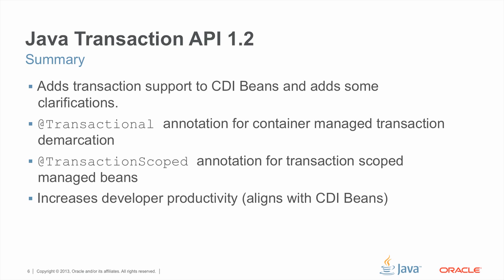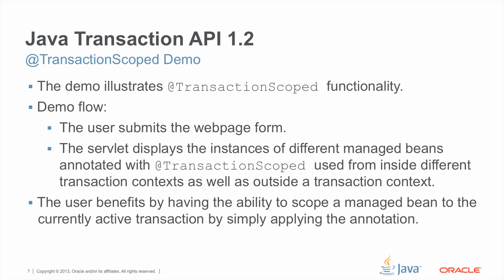In summary, the two new features in JTA 1.2 are really themed around ease of use, and a lot of that ease of use is the adoption of CDI technology. We've seen the two annotations that have been added to provide such functionality. Now we will move on to a couple of demos of these technologies.